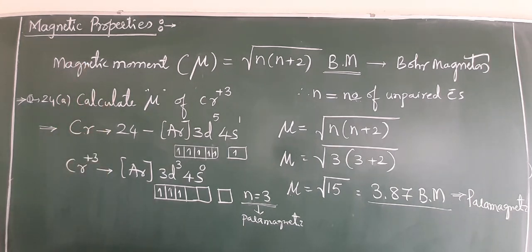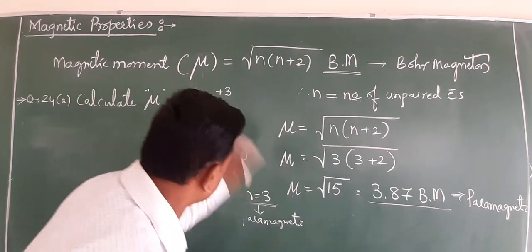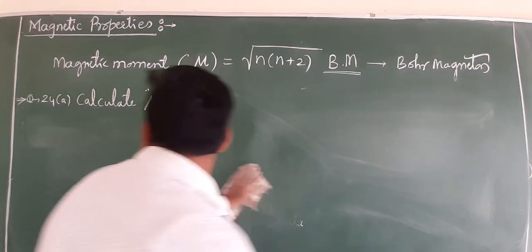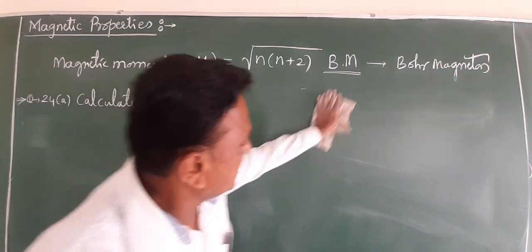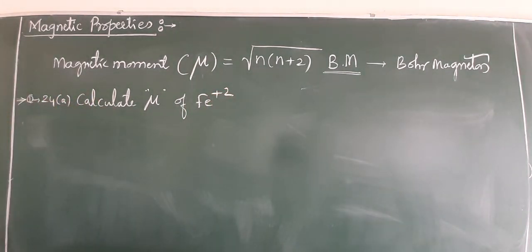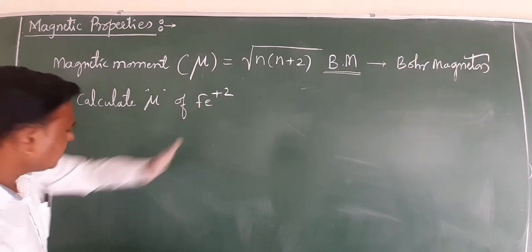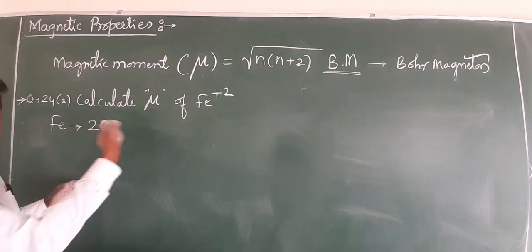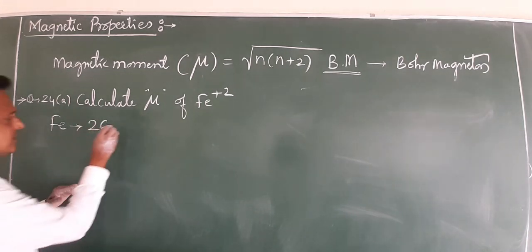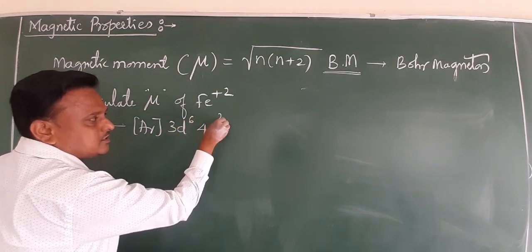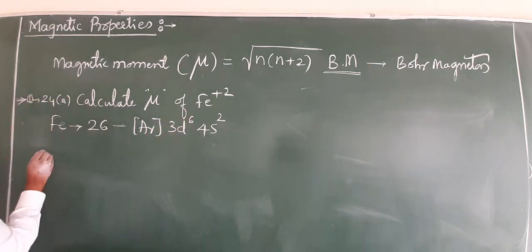I will show you another element mentioned in our syllabus: iron plus 2 (Fe²⁺). Same question - calculate the μ value of Fe²⁺. How to start? First, iron has atomic number 26. The electronic configuration is [Ar] 3d⁶ 4s². Plus two means loss of two electrons, removing the 4s² electrons. So Fe²⁺ is [Ar] 3d⁶.